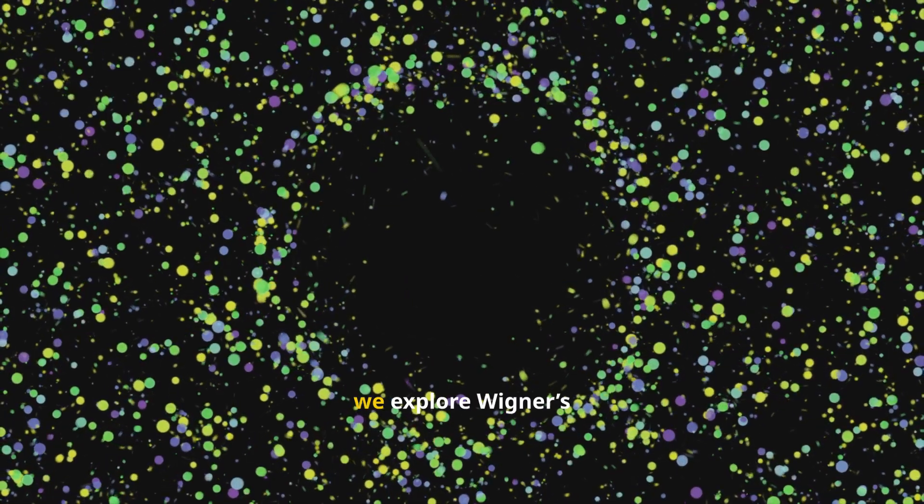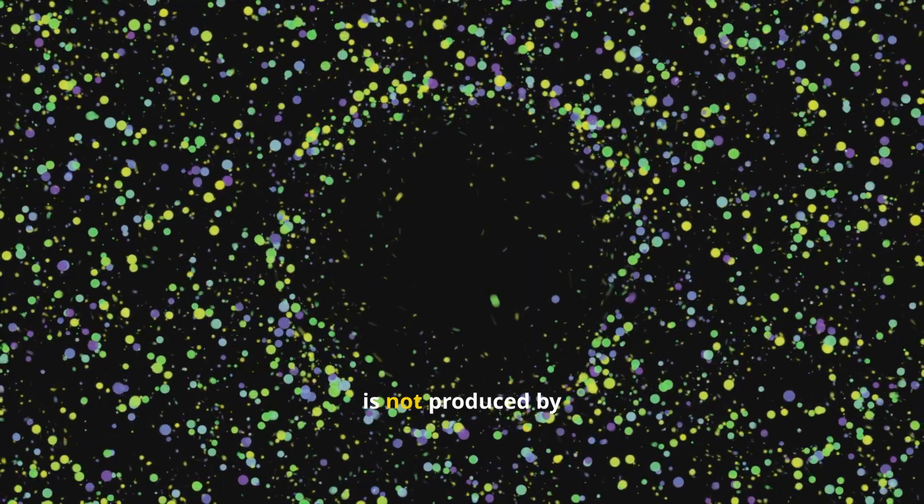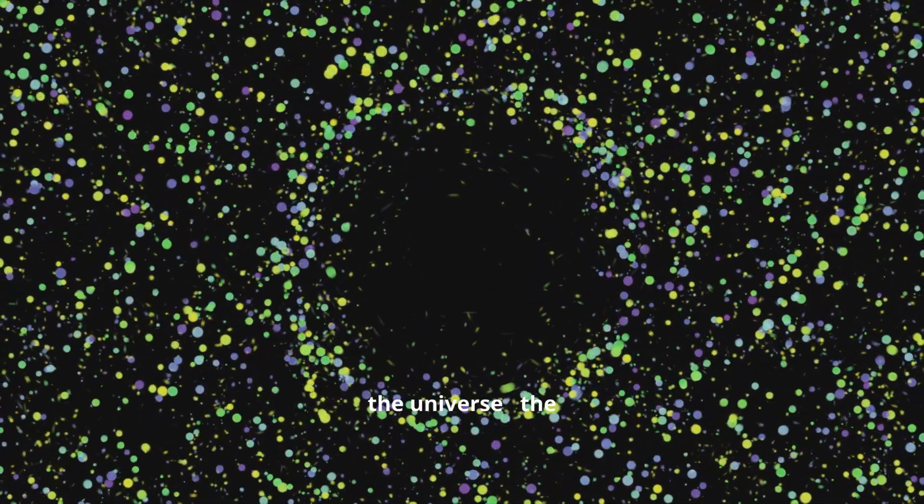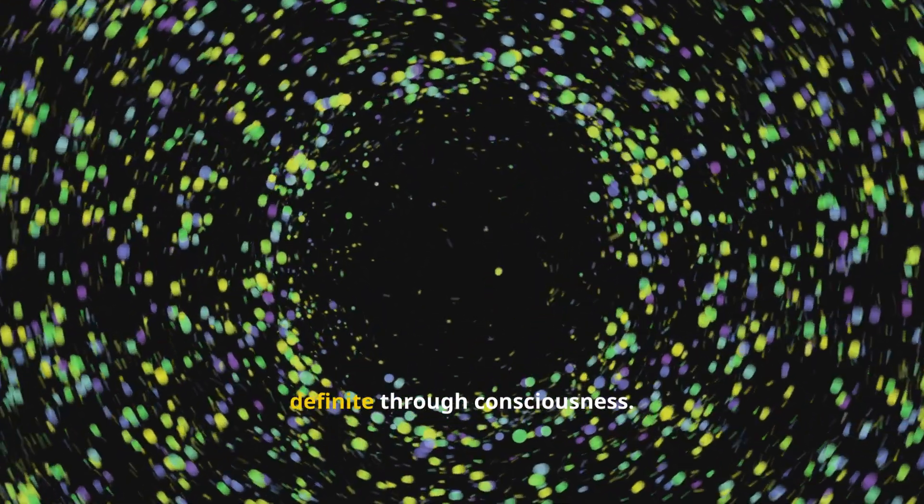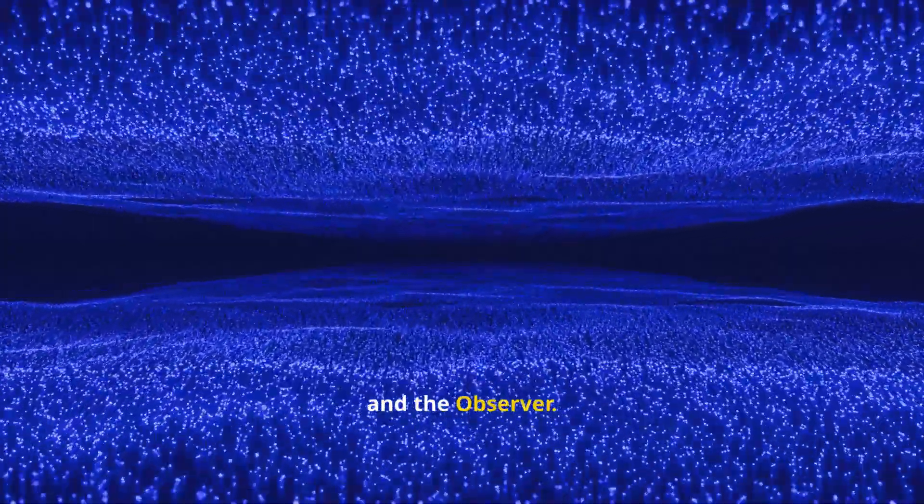In this video, we explore Wigner's radical insight that consciousness is not produced by the universe. The universe becomes definite through consciousness, the quantum measurement problem, and the observer.